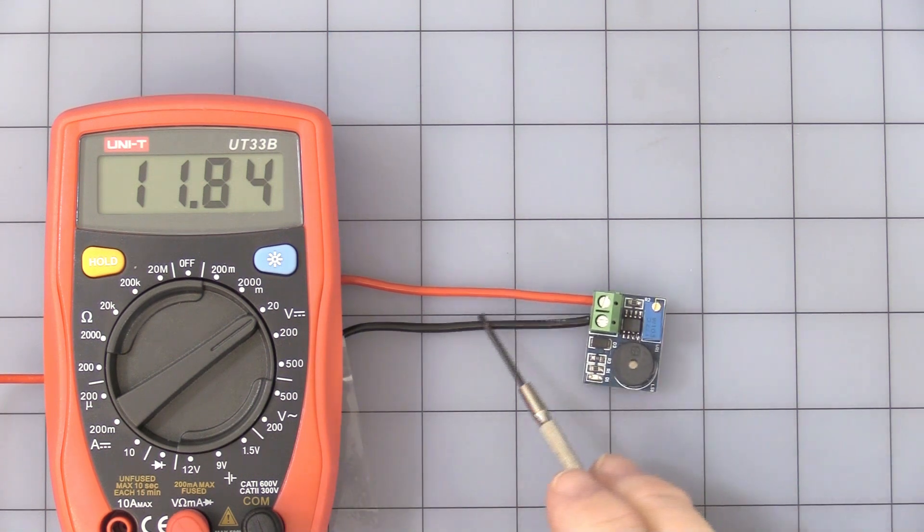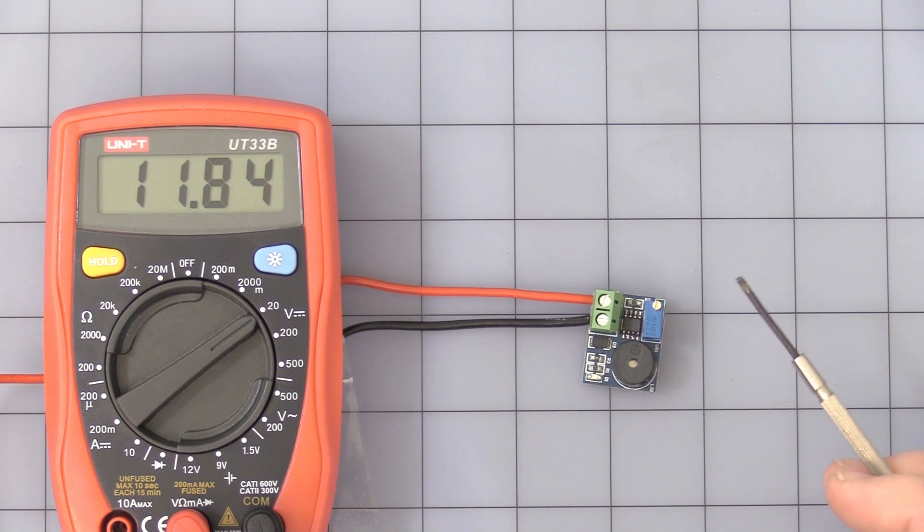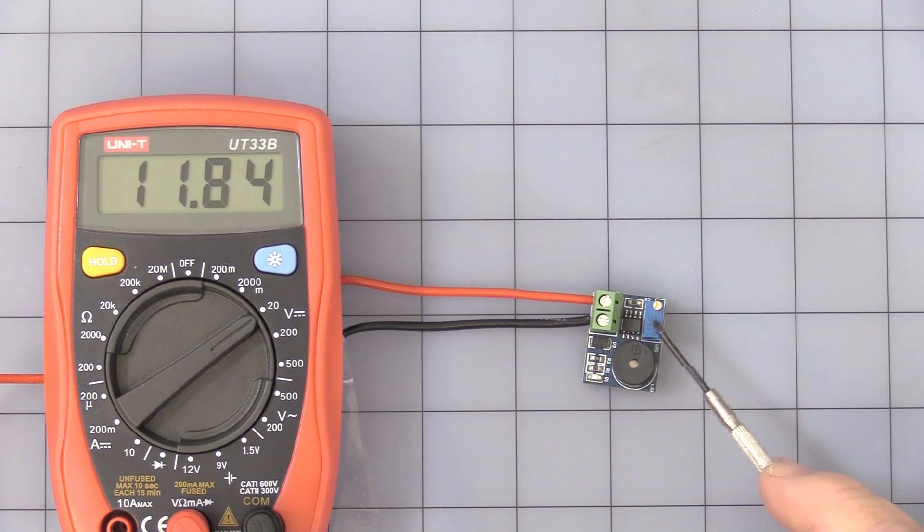Very quickly, I have this hooked up to my benchtop power supply so I can simulate a battery drain. There's the audible alarm, the pot adjusts the set point, and you'll see there's a little LED chip, surface mount chip there, when we reach the setting.